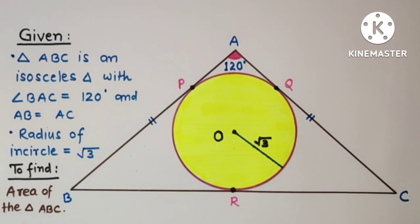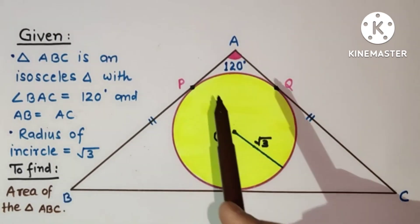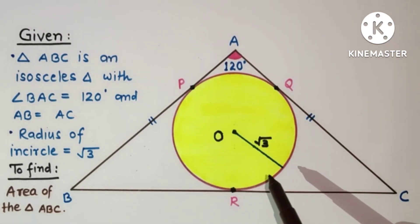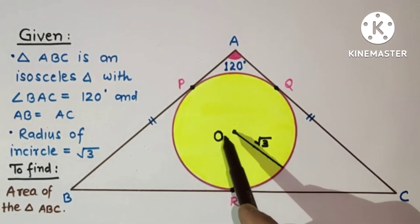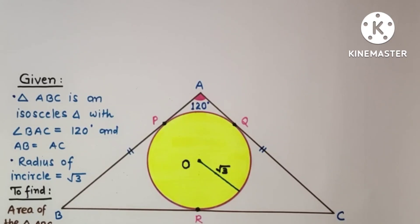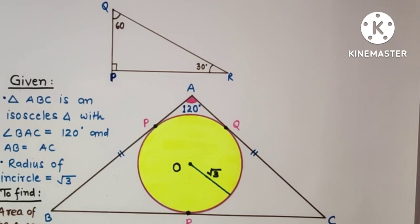Hi everyone, welcome. Today we will analyze and solve a question which was asked in IIT JEE 2006 for two marks. This question is based on 9th grade basic geometry and the 30-60-90 theorem. We are given a triangle ABC such that AB is equal to AC and angle BAC is equal to 120 degrees. The inradius is equal to root 3, and O is the center of the incircle. We have to find the area of triangle ABC without using trigonometry.